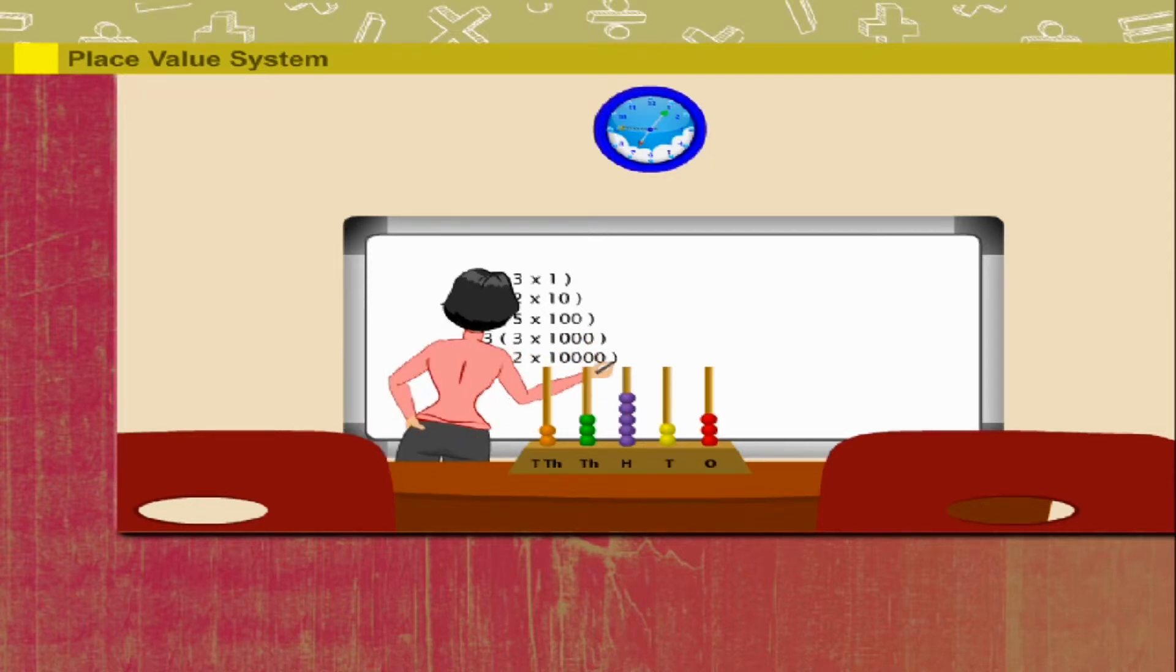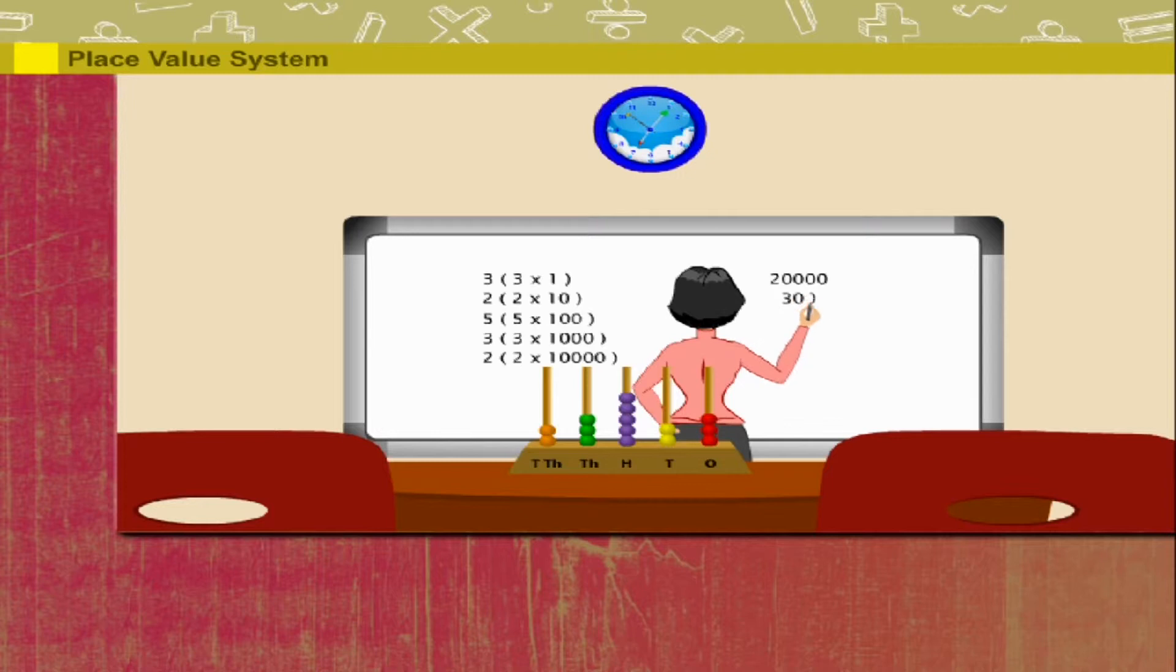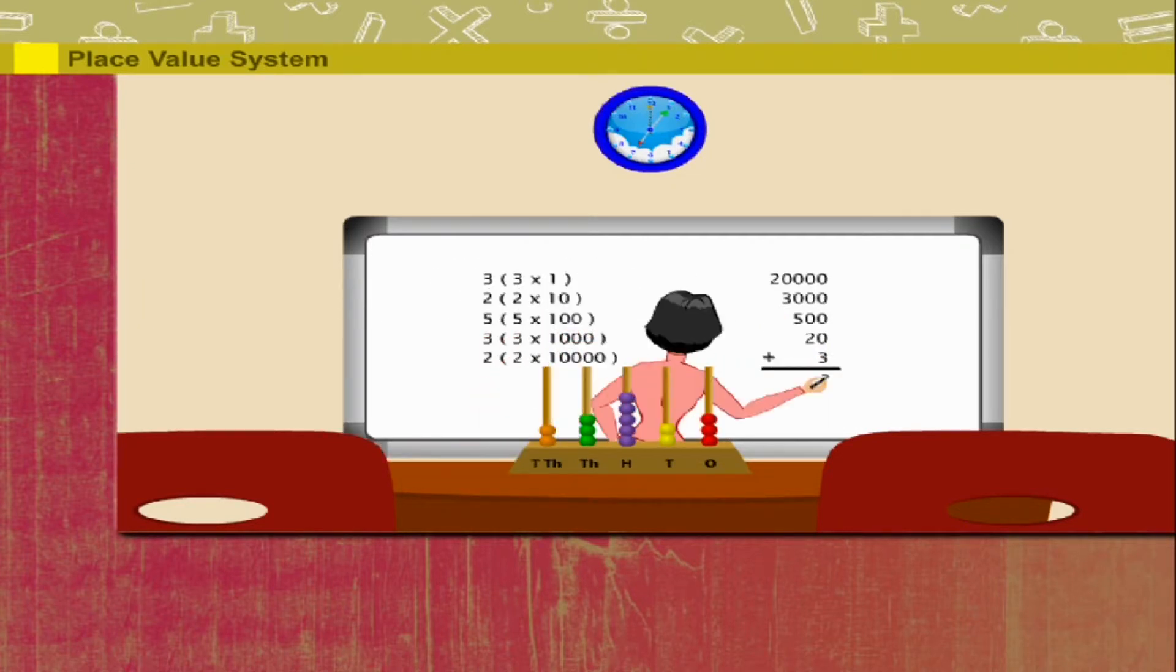Lucy ma'am adds all this: makes twenty thousand and three thousand and five hundred and twenty and three. Makes twenty-three thousand five hundred and twenty-three. Lucy ma'am is so good.